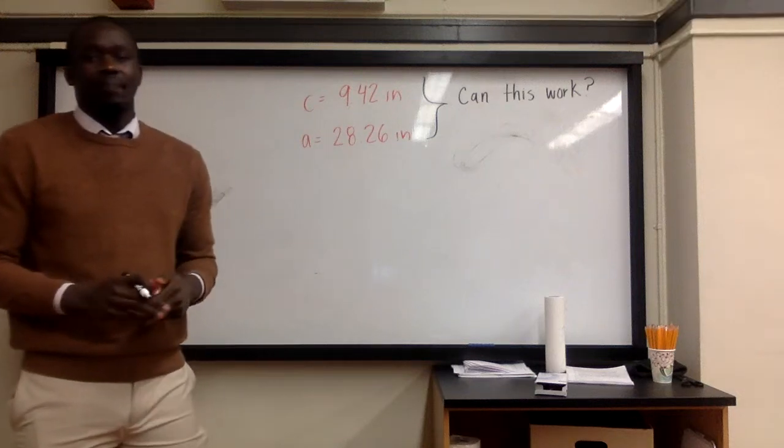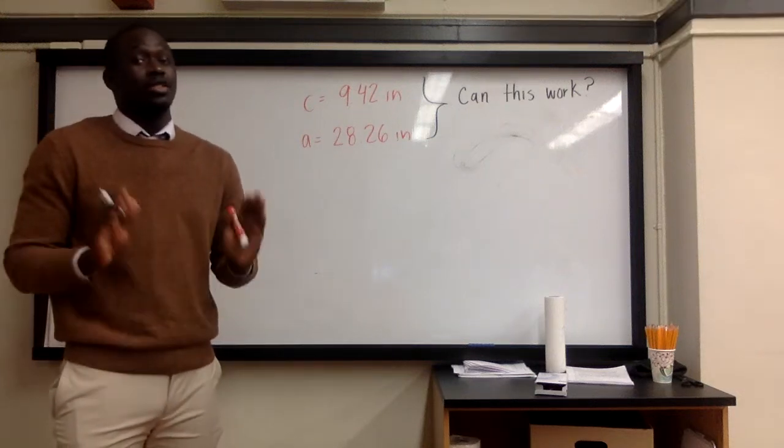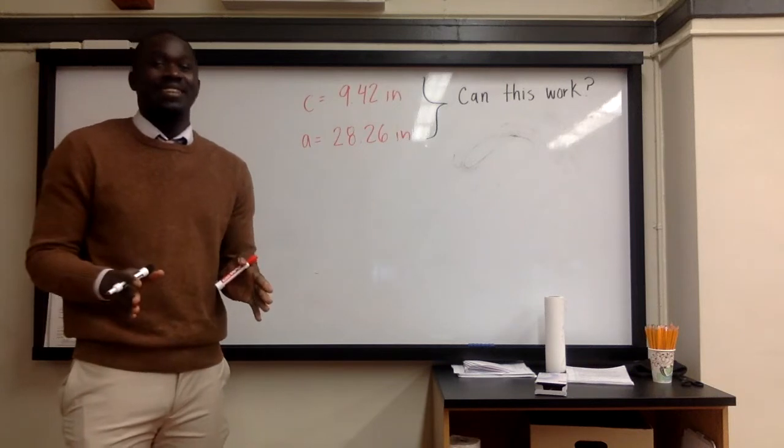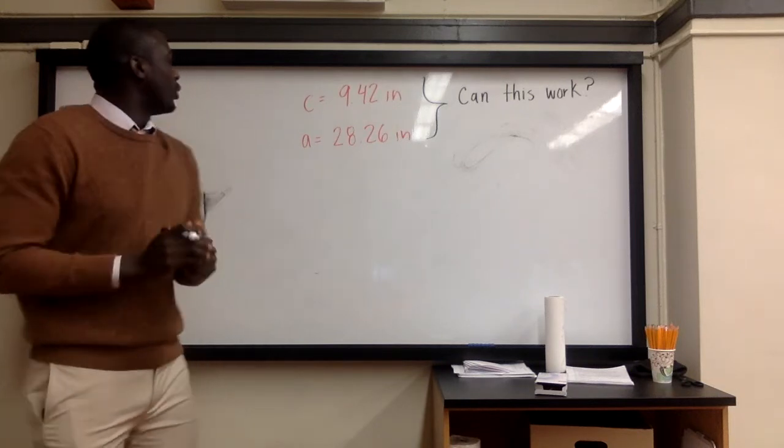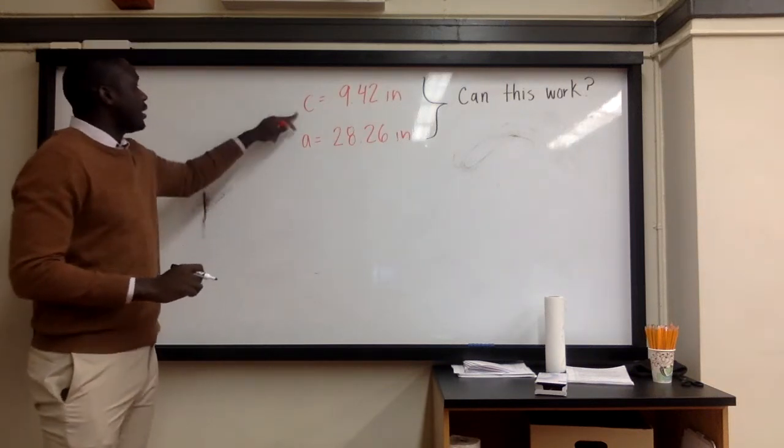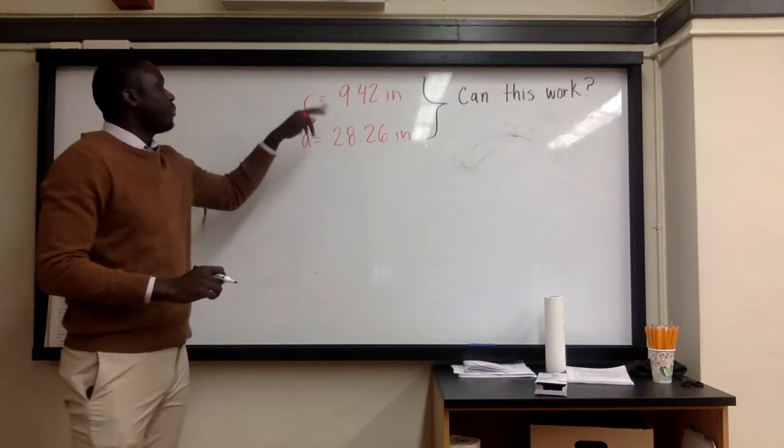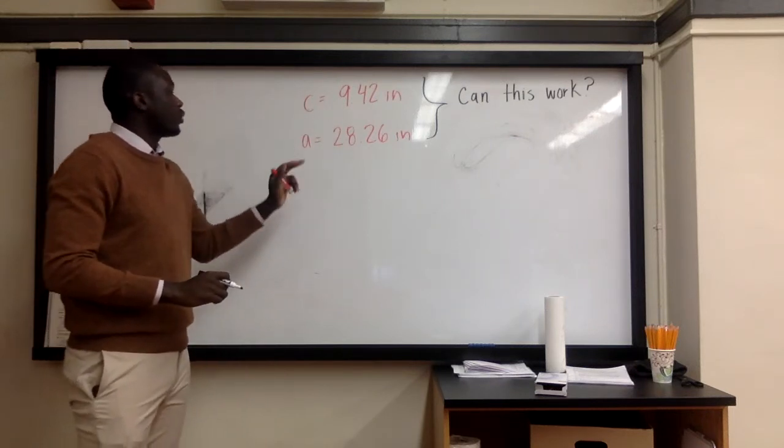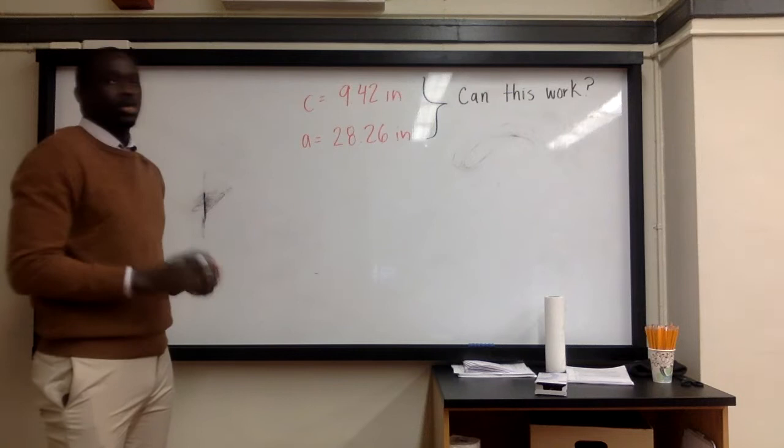Hey seventh graders, I've seen your data when it comes to circles and it has been tracked, and I'm here to fix it because I can do a better job than Mr. Gomez. So you have C, which is the circumference, is equal to 9.42, and then the area is 28.26 inches. Can this work?